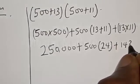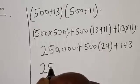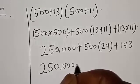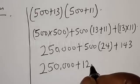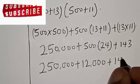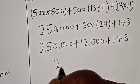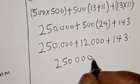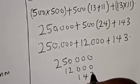500 multiplied by 500 is 250,000. 500 into 24 (that is 13 plus 11) is 12,000. And 13 times 11 is 143. Then we have 250,000 plus 12,000 plus 143. Now let's add everything together: we have 250,000, then 12,000, then 143.